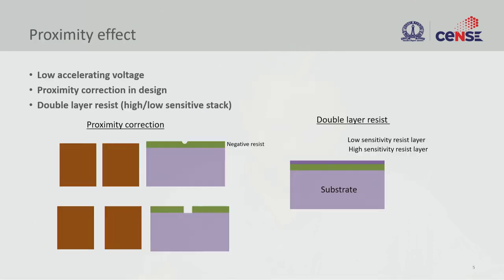Proximity depends on multiple things. Accelerating voltage affects proximity, and proximity correction should be taken care of in the design itself — it is very hard to control proximity error correction while writing. One way of doing that is by using a double-layer resist, which will help with proximity correction. In electron beam lithography, the proximity effect is illustrated by a structure with two different widths in a negative resist.